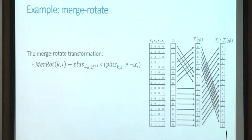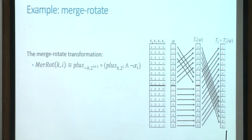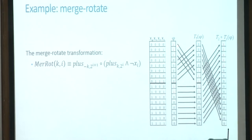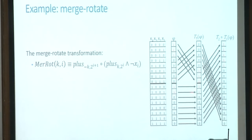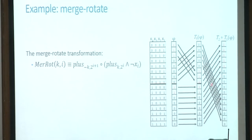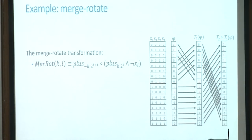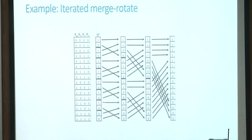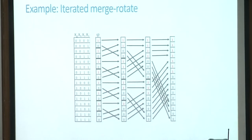Now let's play with transformations to get interesting results. Consider the merge-rotate transformation, which is a composition of transformations. The bottom part of the solution space stays the same (identity), but we apply a shift using plus, which takes scattered ones and puts them all together. Then we rotate the entire space, so we end up with all ones in one contiguous block — exactly what we wanted. Taking this further, even for a complicated-looking solution space, we can apply iteration after iteration and eventually combine everything into a block.